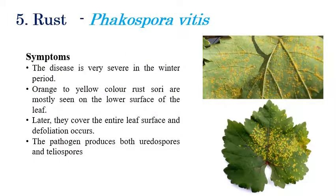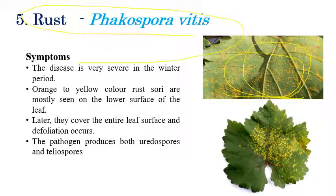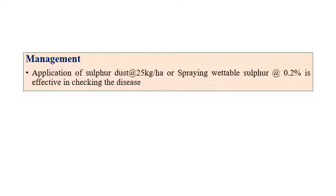Phakopsora vitis is responsible for rust in grapes. Orange-yellow color sori or pustules can be seen on the lower surface of leaves. Later the entire leaf surface is defoliated and covered with uredospore pustules. The pathogen produces both uredospores and teliospores. Yellow, brown, or orange color rust pustules on the lower surface of leaves are the main symptoms. This disease is severe especially in winter. Spraying sulfur dust at 25 kg/ha or wettable sulfur at 0.2 percent can effectively check rust disease.